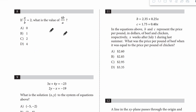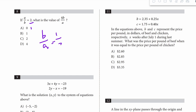Number 8. If a over b equals 2, what is the value of 4b over a? The b is on top of the a, so I'm going to flip this: b over a equals 1 half. We have 4b over a, so 4 times one half equals 2. The answer is 2.